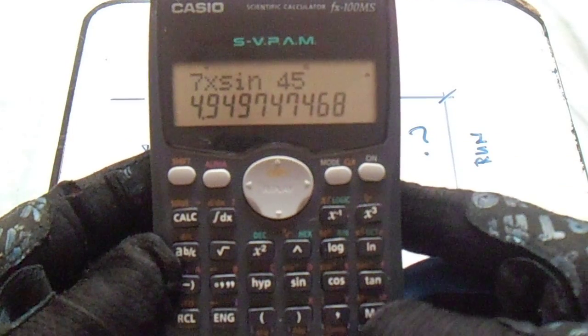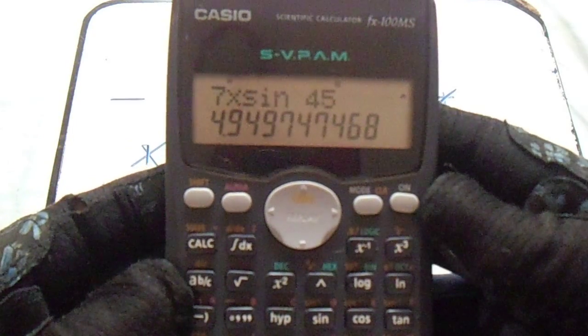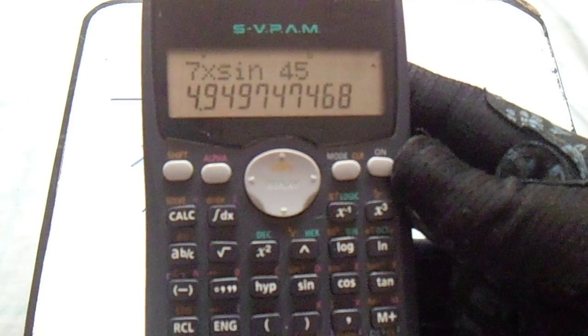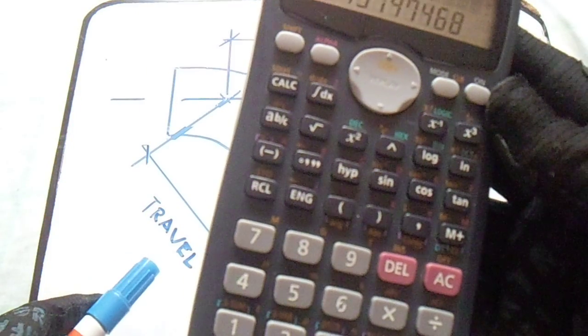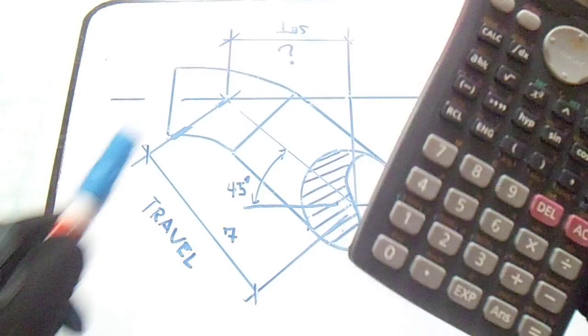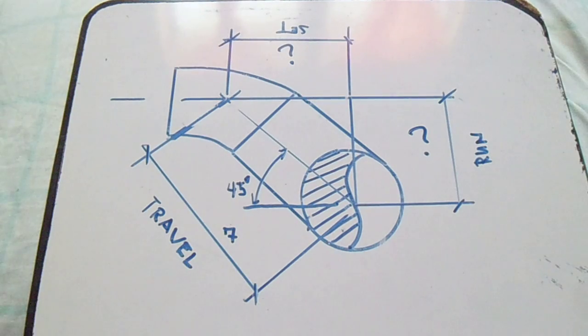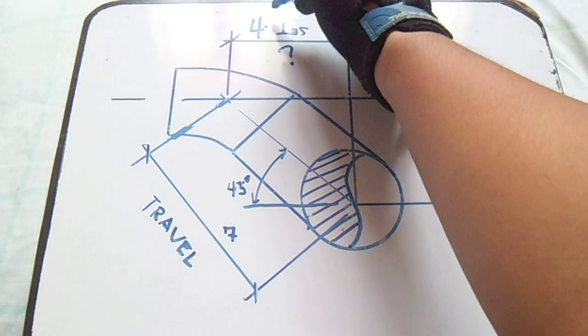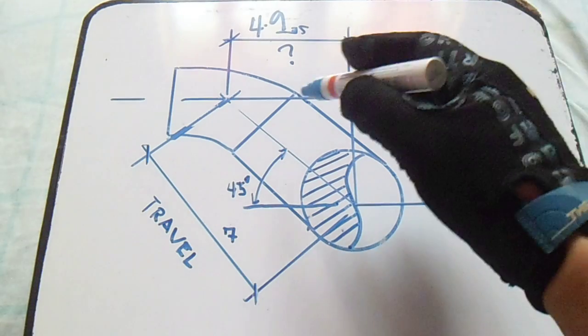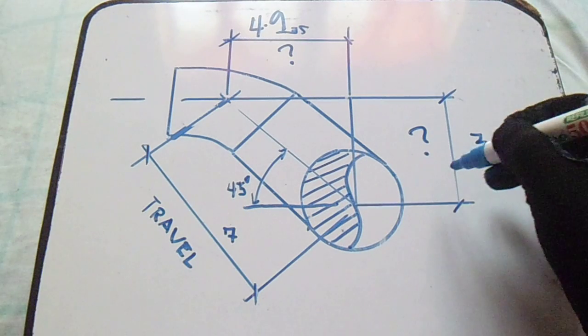Our set is 4.9. So this is 4.9. And of course, this is 45 degrees, so it means our run is also 4.9. This is the final answer, guys.